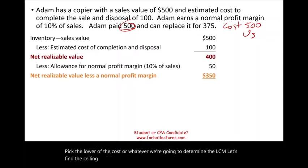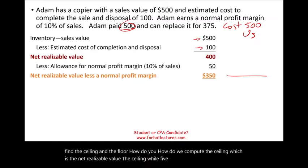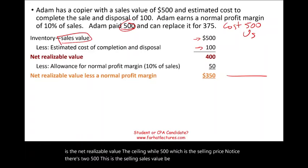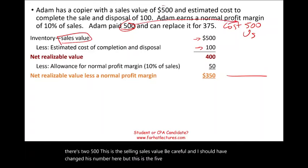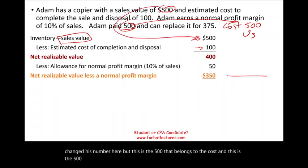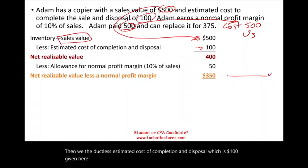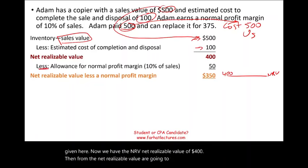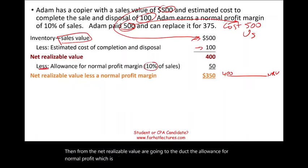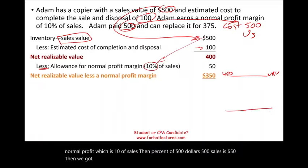Let's find the ceiling and the floor. The ceiling — net realizable value — is computed as the selling price of $500 minus the estimated cost of completion and disposal of $100, giving us an NRV of $400. From the NRV, we deduct the allowance for normal profit, which is 10% of $500 sales, equaling $50. So the floor is $350. We have a ceiling of $400 and a floor of $350.